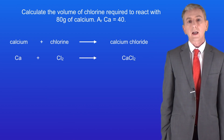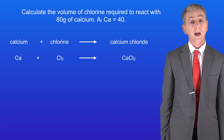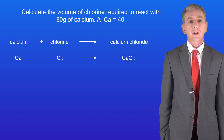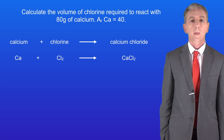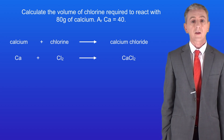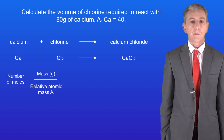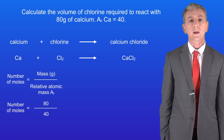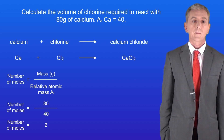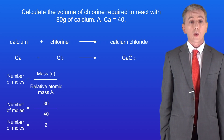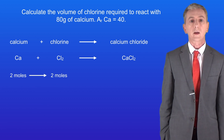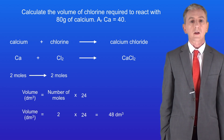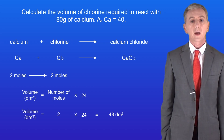Here's a final one for you to try: calculate the volume of chlorine required to react with 80 grams of calcium. Pause the video and try this yourself. From the equation we can see that one mole of calcium will react with one mole of chlorine. The number of moles is the mass divided by the relative atomic mass. The mass is 80 grams and the relative atomic mass of calcium is 40, so we've got two moles of calcium. Therefore we need two moles of chlorine. Multiplying 2 by 24 gives us a volume of 48 decimetres cubed, and that's our final answer.